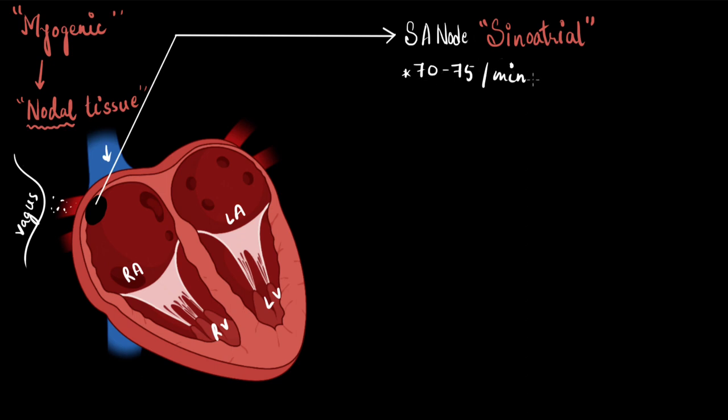That is the pace of our heart. And therefore, the SA node is also called the pacemaker of the heart. Or we also call this the heart rhythm. The rhythmicity of the heart is also maintained by the SA node.